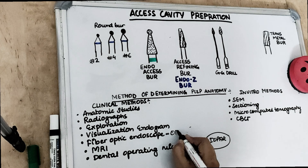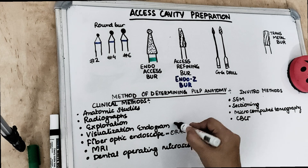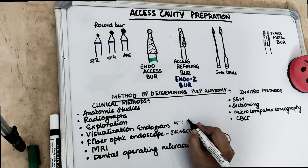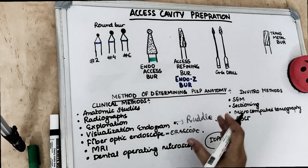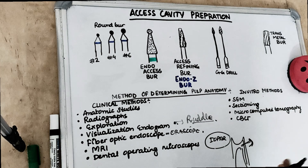These fiber optic endoscopes are known as orascopes or rod lens endoscopes. Endograms use irrigants to help visualize the canal on radiographs — specifically the Ruddle solution, which is used to irrigate all root canals before taking a radiograph. When the radiograph is taken, the pulpal anatomy and canal anatomy appear radio-opaque, showing as white opacity in the canal.